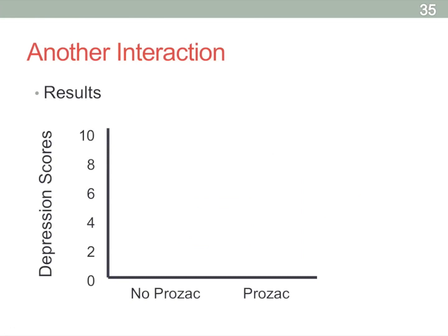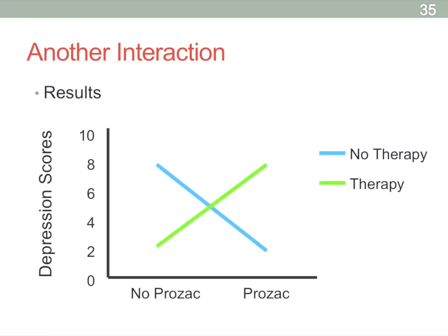Let's say we had a different type of result. Prozac alone decreases depressive scores, and therapy alone also decreases them. But hypothetically, combining Prozac and therapy actually increases depressive scores. So either treatment alone has a positive effect on depression, driving scores down, but combined they have the opposite effect, driving scores up. This is a very clear interaction — you're getting something with therapy and Prozac together that you don't get with either one alone.